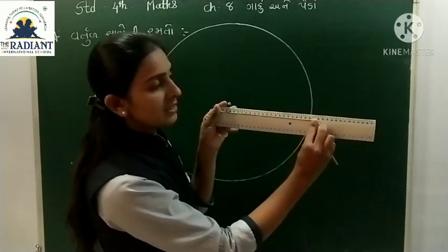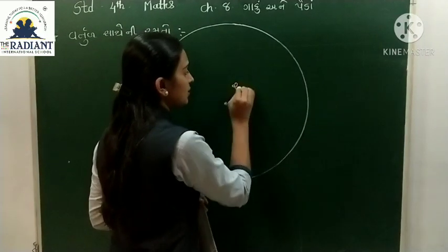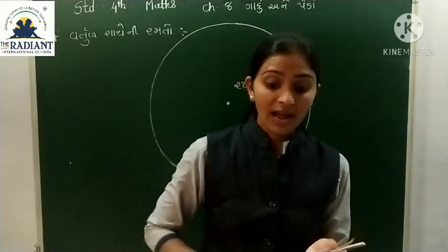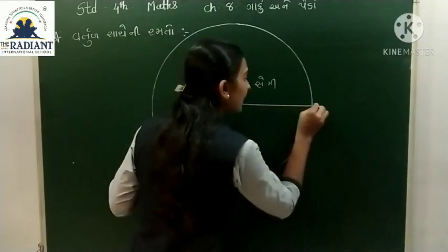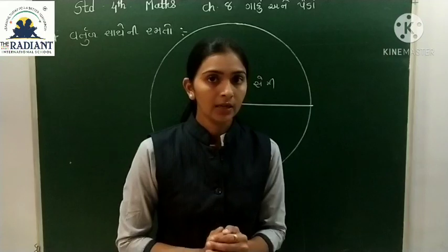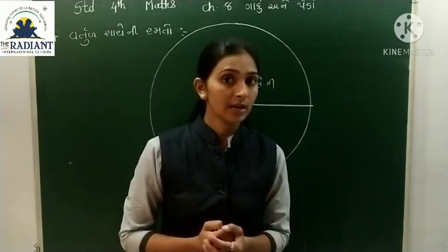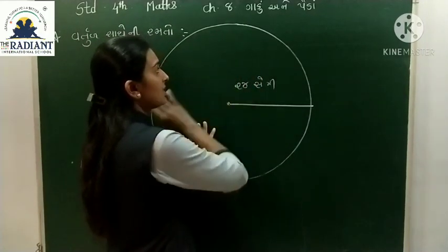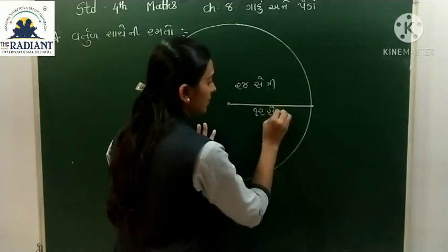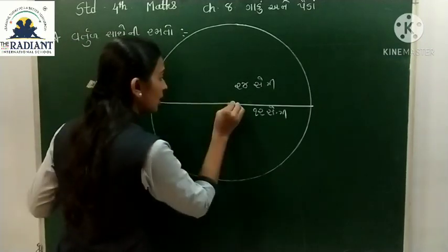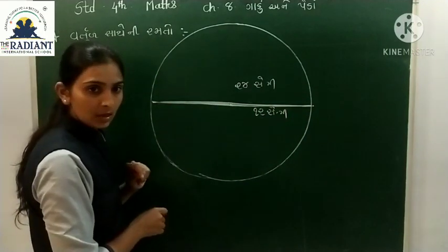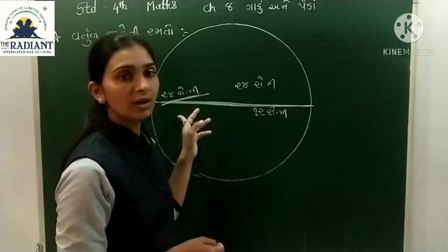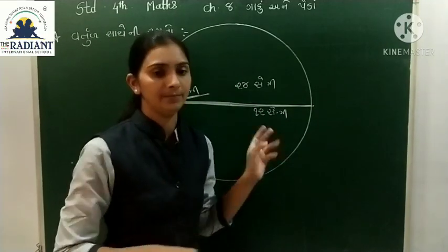આ વર્તુળ ની ત્રિજ્યા કેટ્લી? - મારી આ ડોરી ૨૪ સે.મી. ની છે. ત્રિજ્યા કેટ્લી? - ત્રિજ્યા, વ્યાસ કરતાં અર્ધી. વ્યાસ કેટ્લા સે.મી. નો હસે? - ૨૪ સે.મી. - અને ત્રિજ્યા, વ્યાસ કરતાં અર્ધી.